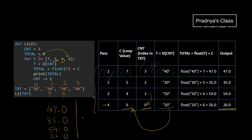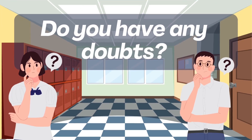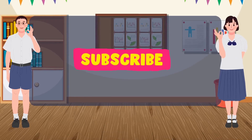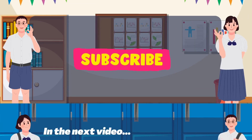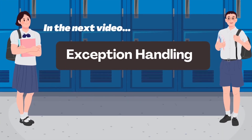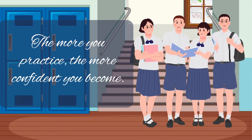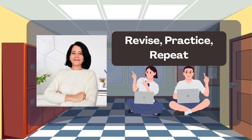In this way, we got the output for this code — hope you understood this explanation. Let's wrap today's video. In case of any doubt, drop a comment. If you find this video helpful, give it a thumbs up and share it with your friends. In the next video, we are going to move on to exception handling. Remember, the more you practice, the more confident you become. Until next time, stay focused and stay practicing — I will see you in the next video.